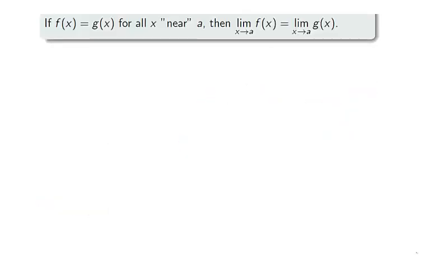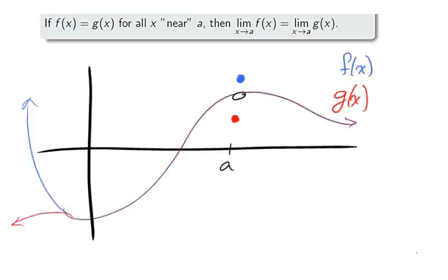With our ant visualization from section 1.5, it is easy to see why this theorem is true. We take the graph of f and g with f colored blue, g colored red, and points in common colored purple. Notice that the points near a are all purple.